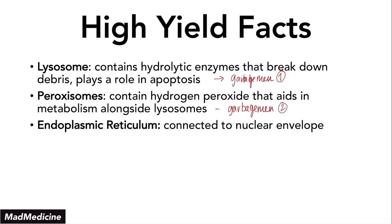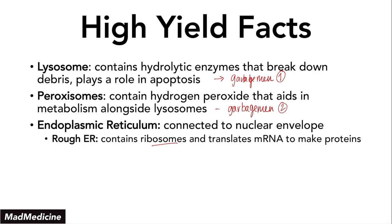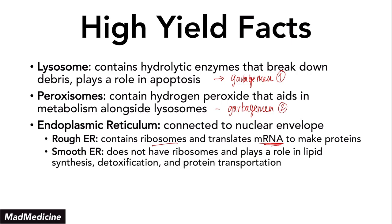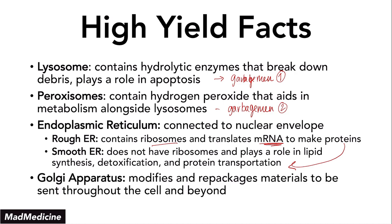Then you have the endoplasmic reticulum, which is connected to the nuclear envelope. The endoplasmic reticulum has two components: the rough endoplasmic reticulum, which contains ribosomes and is mainly where mRNA coming out of the nucleus is going to be translated into proteins; and then the smooth endoplasmic reticulum, which does not have ribosomes. Proteins then go from the rough ER to the smooth ER. Usually they'll then go to the next organelle — the Golgi apparatus.